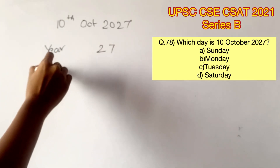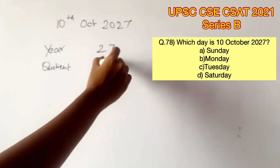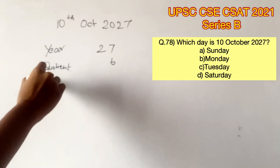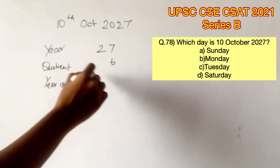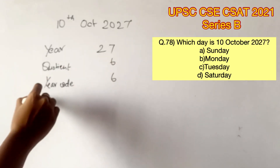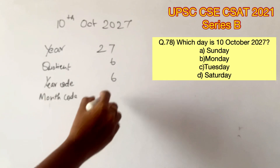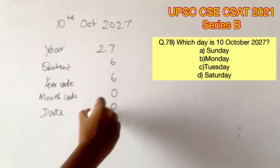All we have to do is write down the last two digits of the year. The second step is to write the quotient when the year is divided by four. The third step is to write the year code — the year code for any year between 2000 and 2099 is six. Next, write the month code — the month code for October is zero. The last step is to write the given date.